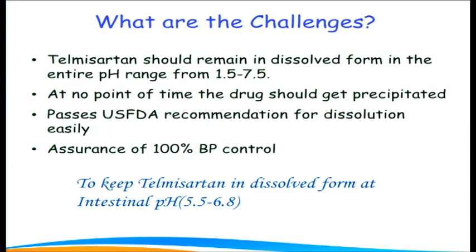Therefore, the technological challenge while developing telmisartan formulations was to keep telmisartan always in the dissolved form across the entire pH range from 1.5 to 7.5. At no point should the drug precipitate — it should pass FDA dissolution criteria easily and ensure 100% blood pressure control.